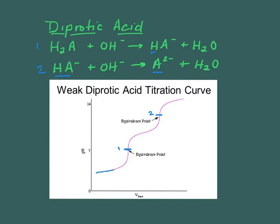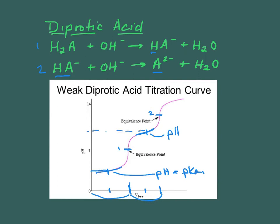Also note that you have a buffer area here. This is the equivalence point, and right here is the half equivalence point. Remember, you can use the fact that pH equals pKa at the half equivalence point, and you can find Ka1 for this acid. As we go to the second one, you've got another buffer area. If this is the second equivalence point — notice that the same volumes are used to go from first to second — halfway again, the pH will give you the pKa for HA minus. So this is the Ka for HA minus, and this is the Ka for H2A. You'll get two equivalence points, and you can use the half equivalence points to find Ka1 and Ka2.